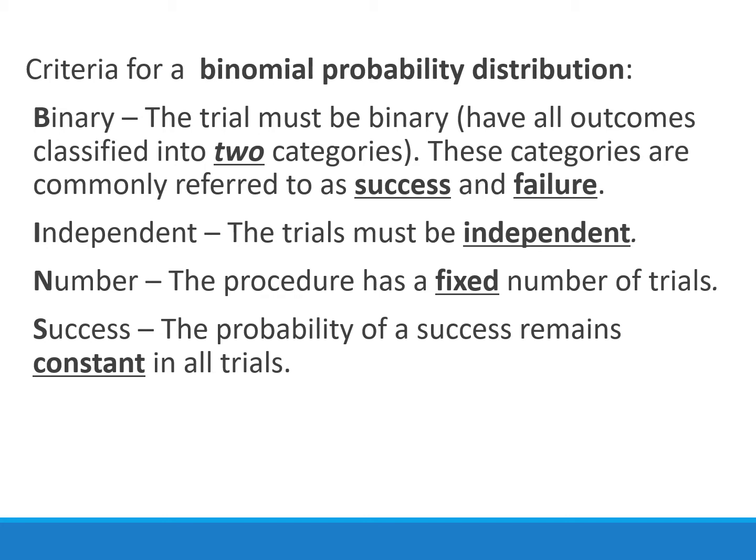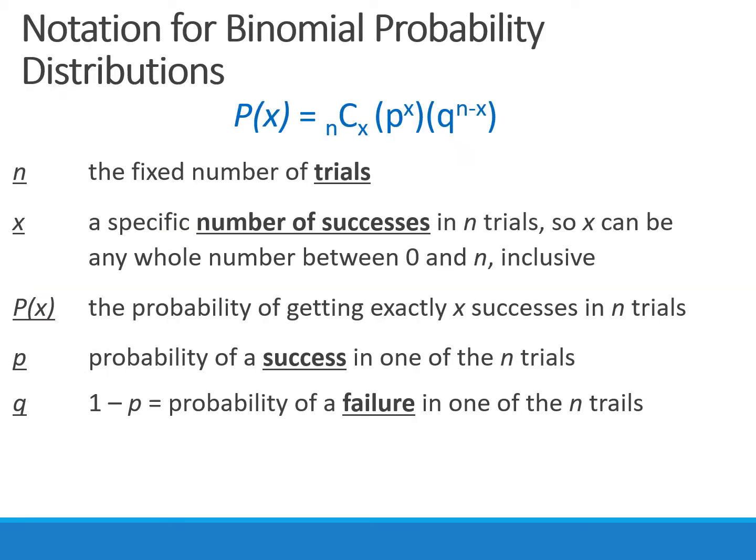The things that do have to be true for a binomial probability distribution are these four criteria, and we can remember what they are with the acronym BINS. The B stands for binary - there have to be two outcomes for the problem, typically referred to as success and failure. All our trials need to be independent of one another, and we need to have a fixed number of trials. Lastly, the probability of success stays constant in all the trials, meaning that it's not changing as we progress through the problem. If those four criteria are true, the problem is binomial and allows us to use this equation here.